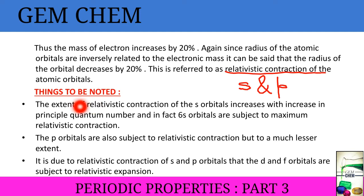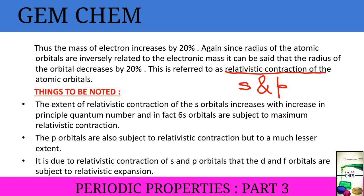The extent of relativistic contraction of s orbitals increases with the increase in principal quantum number — that is, with increase in period number. In fact, the 6s orbitals are subject to maximum relativistic contraction; they are maximally retained within the shell and maximally attracted towards the nucleus. The p orbitals are also subject to relativistic contraction, but to a much lesser extent. Due to the contraction of s and p orbitals, the other two orbitals — d and f — actually undergo relativistic expansion.